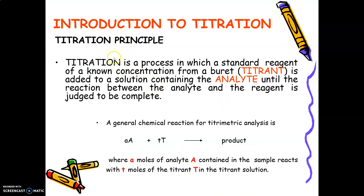The principle of titration is the process where a standard reagent of known concentration from a burette, called the titrant, is added to a solution containing the analyte until the reaction between analyte and reagent is judged to be complete. From the titration, when the reaction is complete, a balanced chemical equation shows the number of moles of analyte reacting with the number of moles of titrant to form a product. At this point, we can know the exact number of moles of analyte reacting with the exact number of moles of titrant.